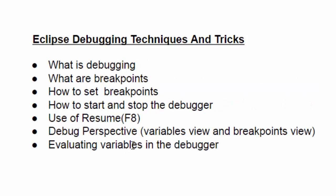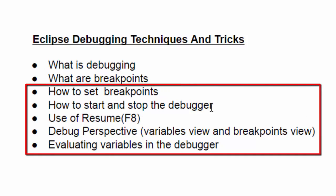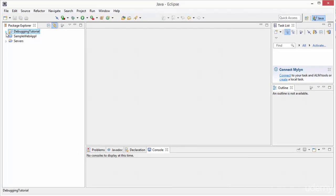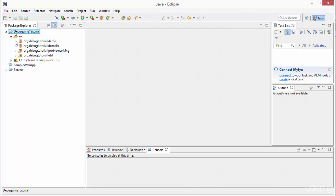Now, as the remaining topics like how to set breakpoints, how to start and stop the debugger, use of resume, debug perspective, and evaluating variables in the debugger are more example-based, let's go to Eclipse and explain them one by one. In Eclipse, we have a sample project called debugging tutorial. Let's go inside source and open a very simple program called debug hello world.java.